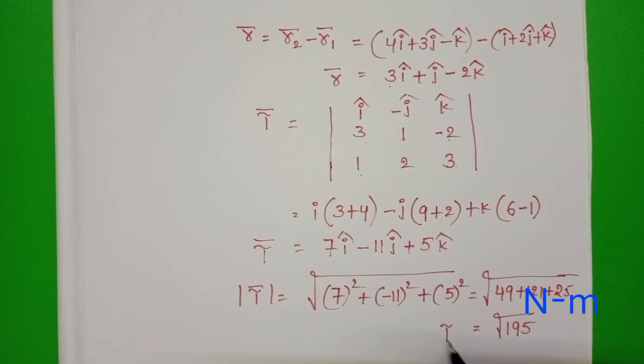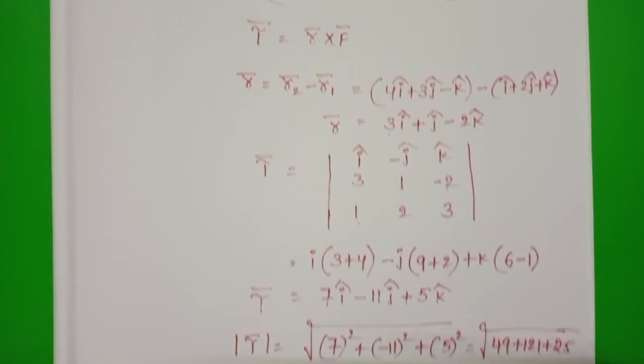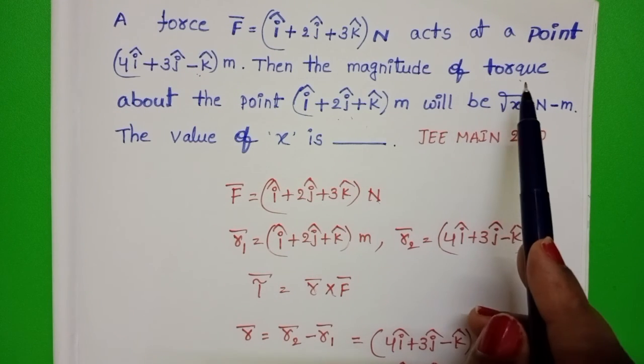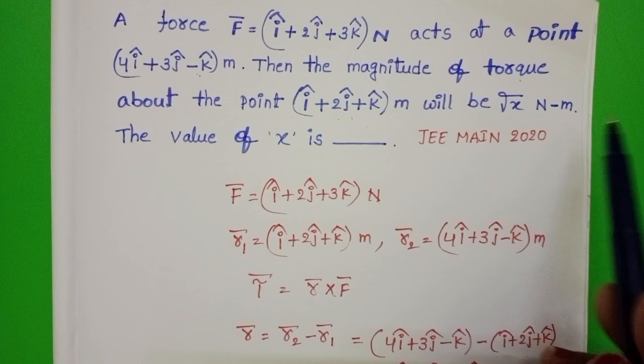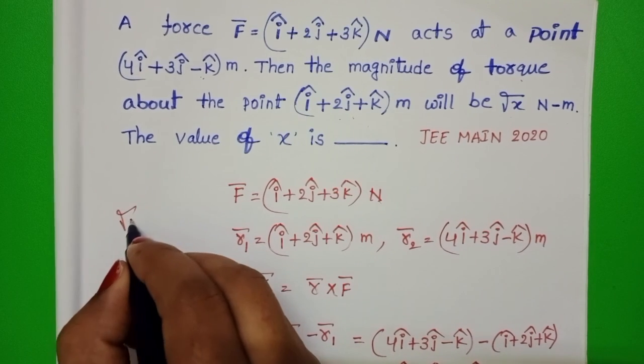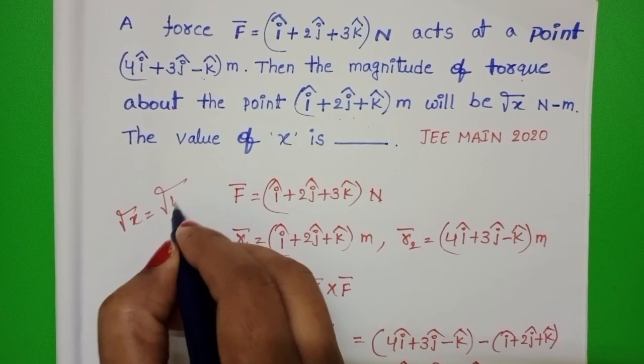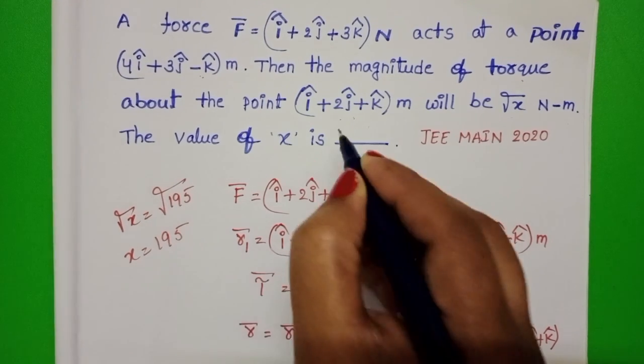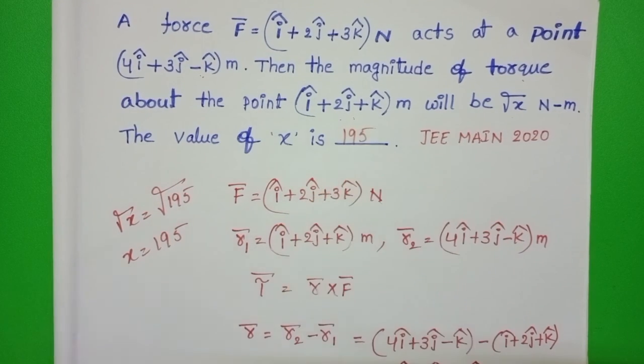So magnitude of torque equals square root of 195. In the given problem, magnitude of torque is root x newton meter. So root x equals square root of 195. Then x equals 195. So answer is 195.